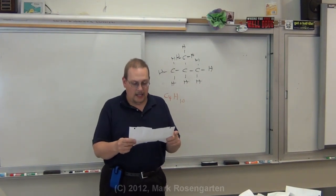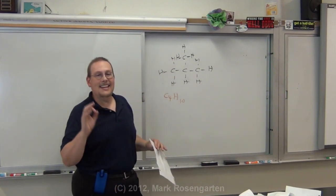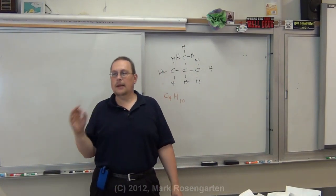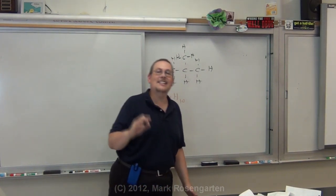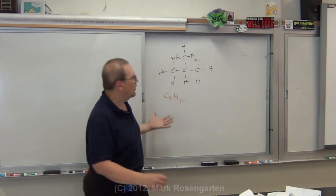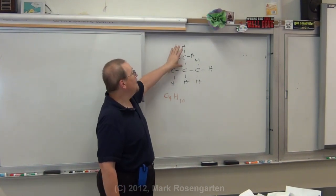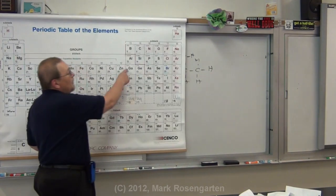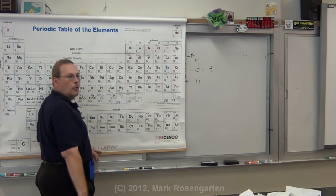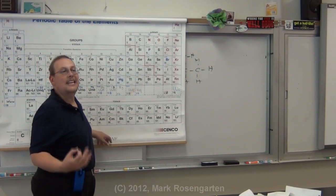What is an element? An element is a substance which cannot be decomposed into any simpler substance. You can take water and break it down into hydrogen and oxygen. You can take this molecule and break it down into carbon and hydrogen. But an element can never be broken down into anything simpler. Gallium is the simplest form of gallium that there is. It's a substance that cannot be decomposed any further.